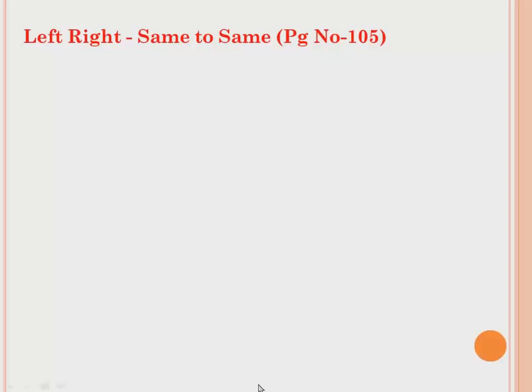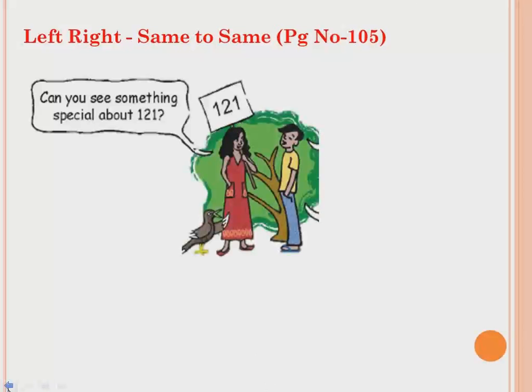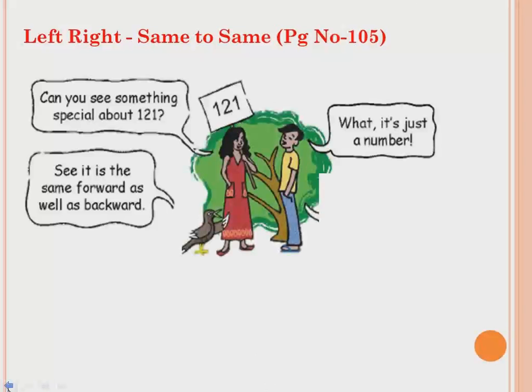Now, left and right — same to same — page number 105. Can you see a number here? The number is 121. Can you see something special about 121? It is the same forward as well as backward.